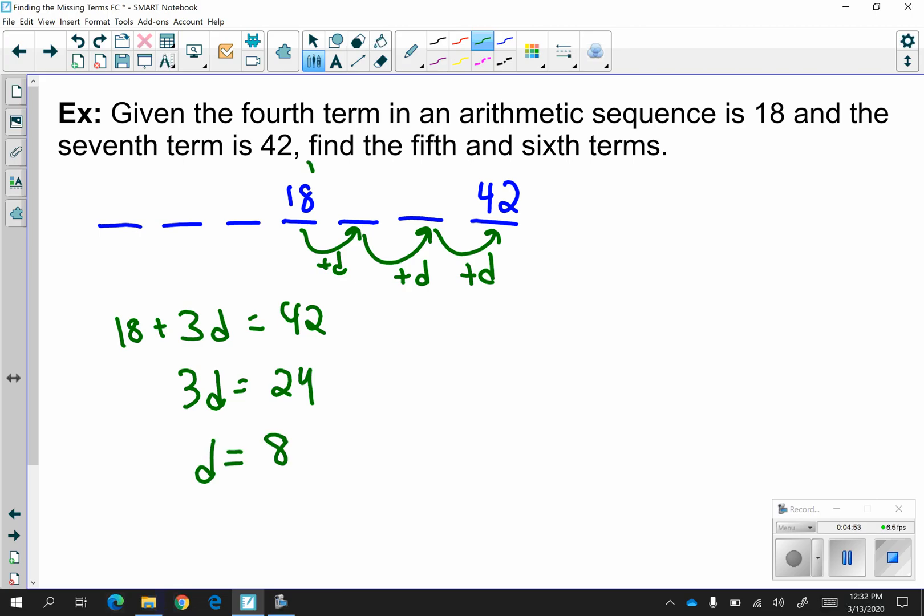So 18 plus 8 is going to give me 26. Plus 8 is going to give me 34. Plus 8 is going to give me 42. Which means everything checks out. So a sub 5, which is what we wanted, is 26. And a sub 6 is 34.